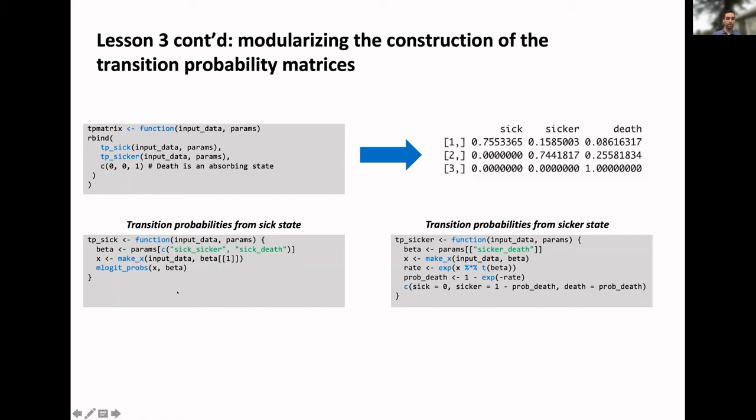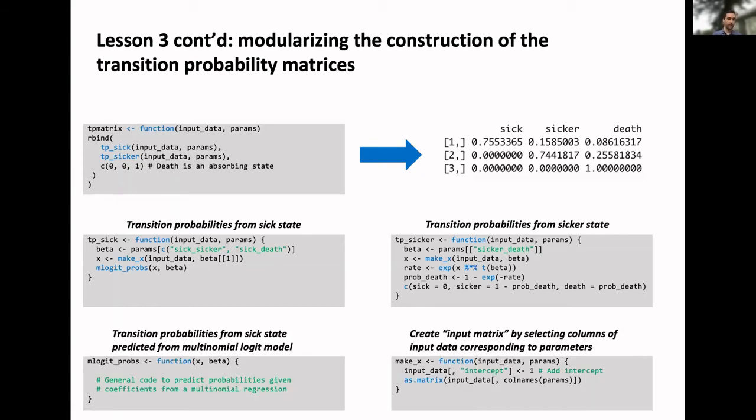There are themselves calling other functions. For example, from the sick state, we have a general function called mlogit probs. That could be a general function for if you have a multinomial logit model, how can we predict probabilities? You can see on the bottom left, I don't have the implementation here, but I do have it in a GitHub repo. And likewise, if we're trying to make predictions in a regression framework, we need both the parameters and then we need a model matrix or an input matrix. We have another function called make X, which will just produce the model matrix we need to make the predictions. The main point is to keep things modular and have each function try to do one specific thing, rather than trying to do too much in a specific function.